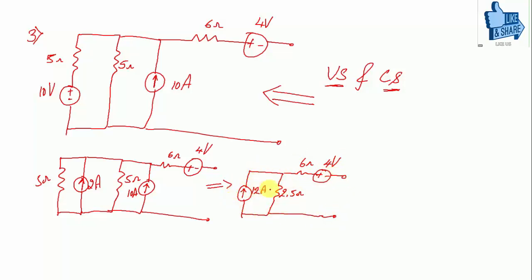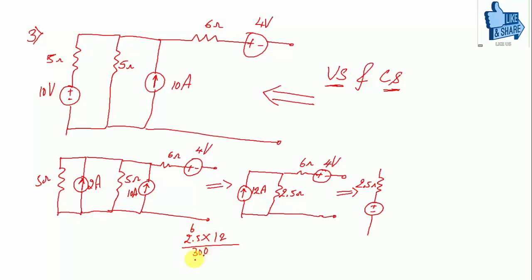Now convert the 12 A current source with 2.5 Ω into a voltage source. The voltage equals 12 × 2.5 = 30 volts, with 2.5 Ω in series. The remaining network of 6 Ω and 4 V is also in series with this.